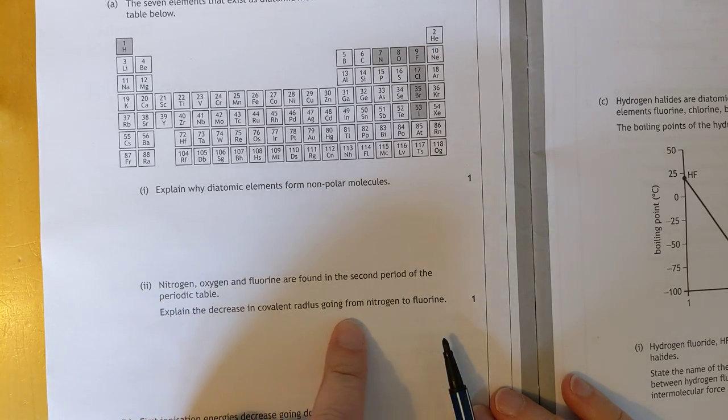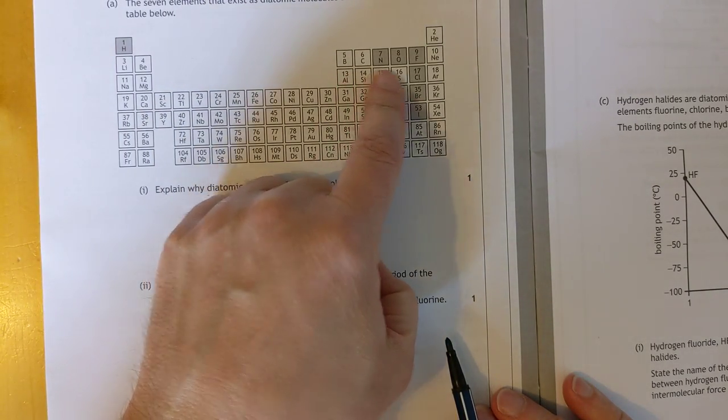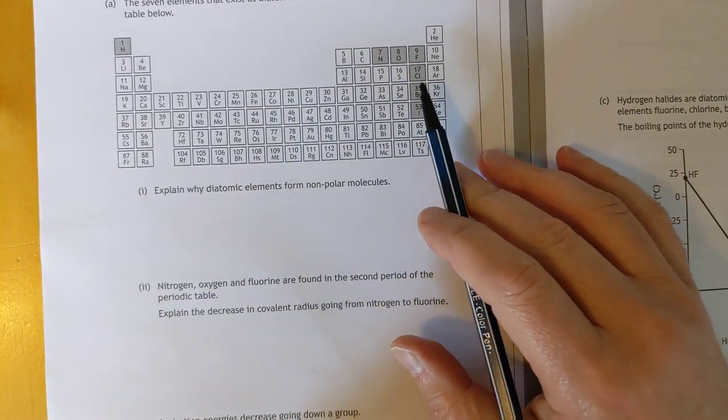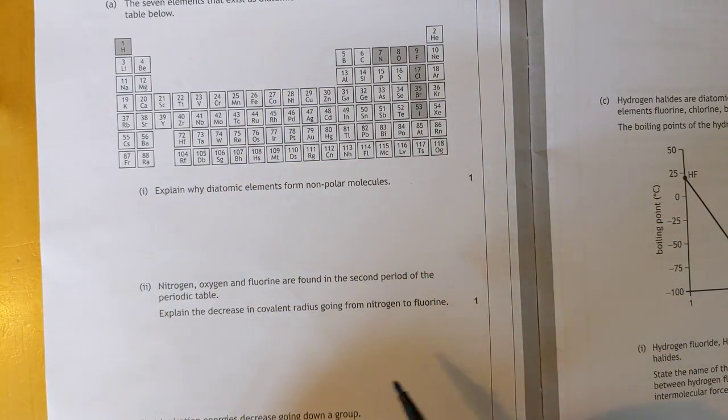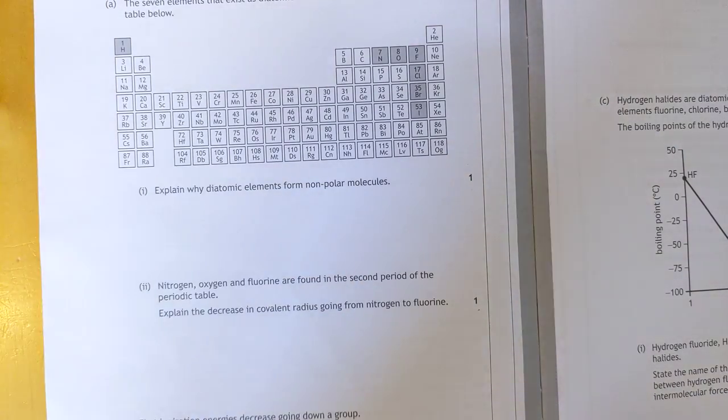Explain why diatomic elements form non-polar molecules. Simple, there are identical electronegativity values for the element's atoms. Same EN values. Explain the decrease in covalent radius going from nitrogen to fluorine. Simple answer there. There's an increase in the nuclear charge. Pulls the electrons in to a tighter, basically. That's why they get smaller.